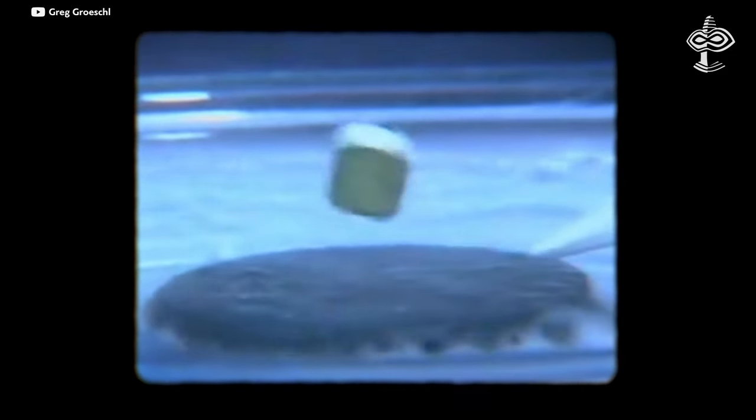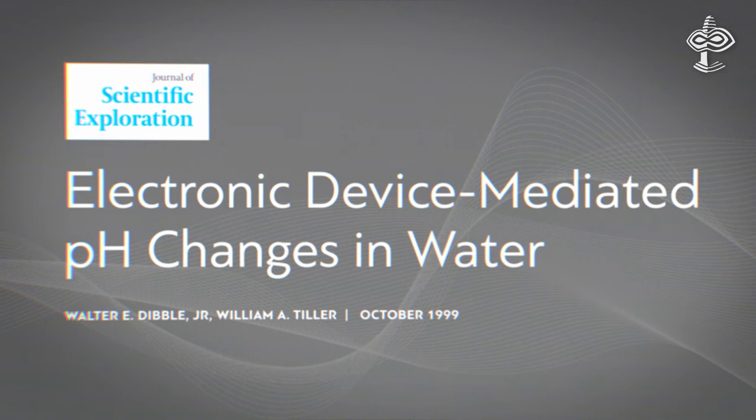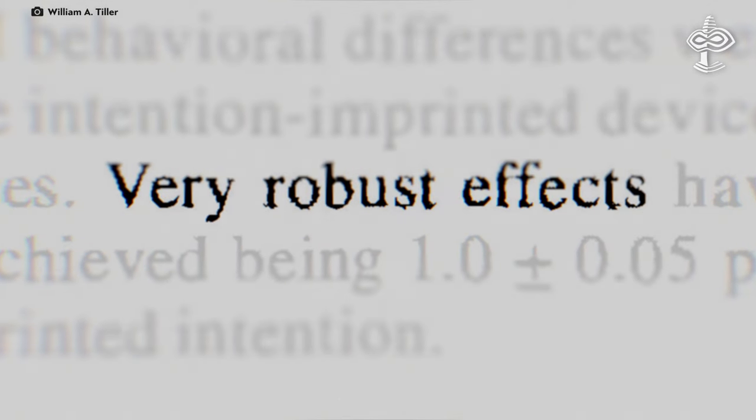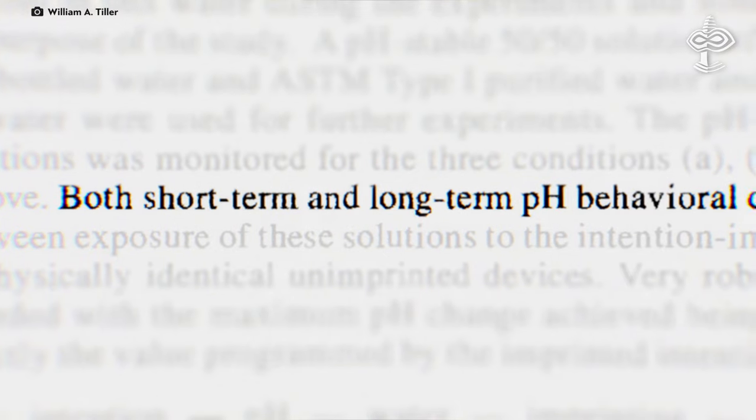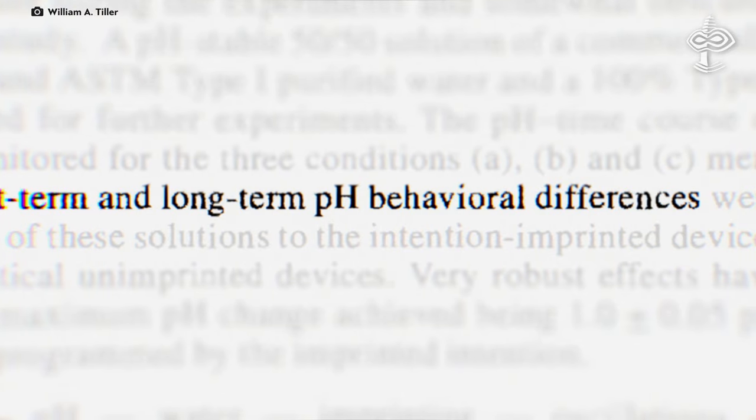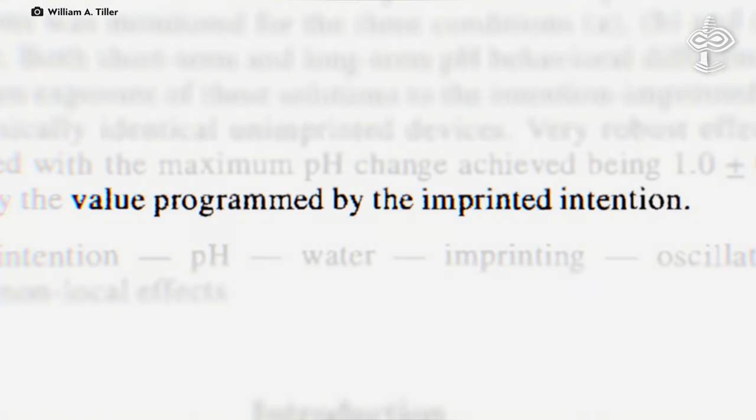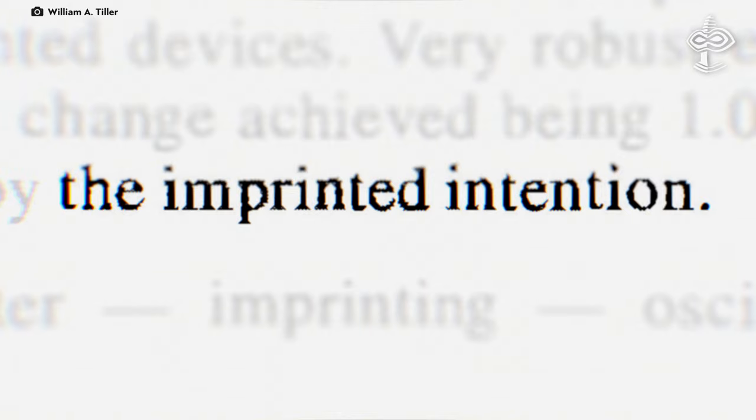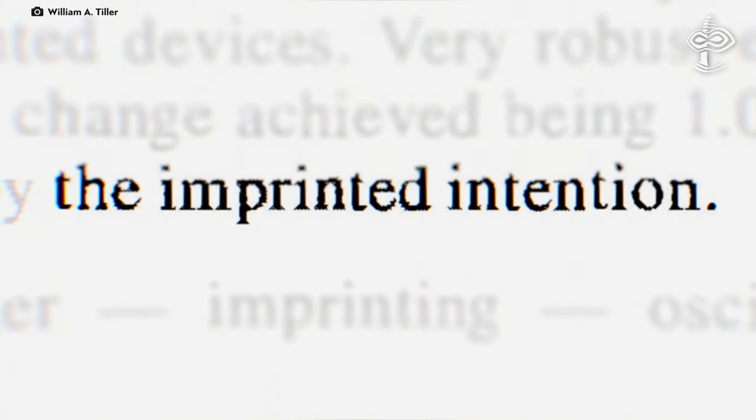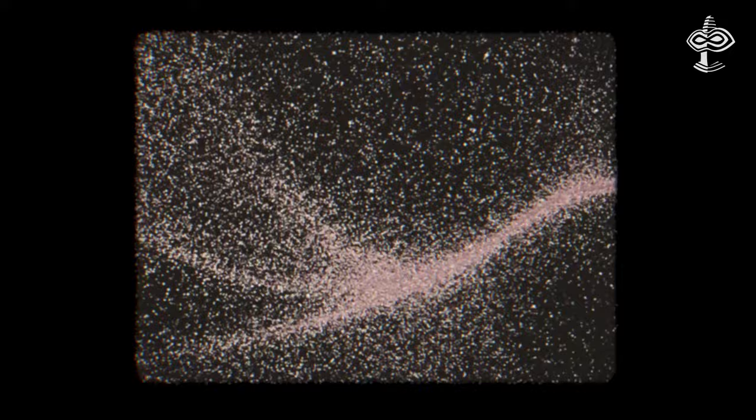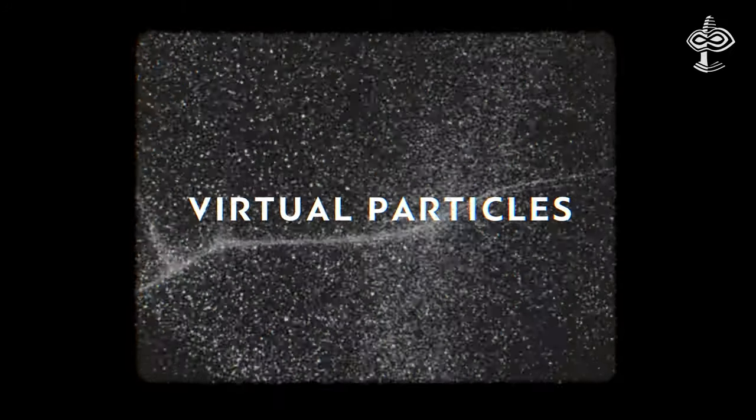There is a growing body of experimental data and evidence that supports the idea that intention can exert a tangible influence over physical systems. In the notable study of Tiller and Dibble, they observed changes in environmental properties like temperature and pH in laboratory settings where intention-imbued instruments were used. These changes seemed to indicate a shift in physical reality within the lab, potentially due to ordering effects exerted on virtual particles in an unseen domain.